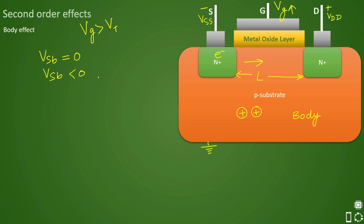So this is called as body effect. Hence we need to bias the body so that if there is any negative spike comes that gets grounded and it does not disturb the potential in the transistor.